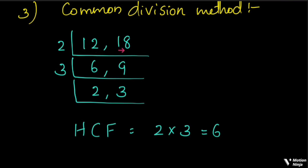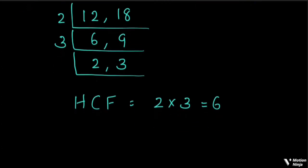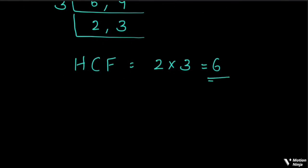The two numbers are fully divisible. If we stop the division, we can select the factors on the left side. We multiply the divisors to get HCF. HCF is equal to 2 × 3 = 6. This is the common division method — a simple technique. I prefer this common division method.